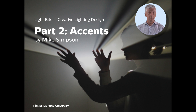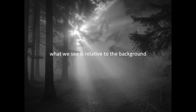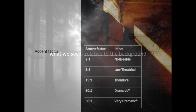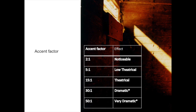We also have to think about the things that we're lighting and how they fit relative to their background, because ultimately everything we see will have some sort of background to it. It's the relationship between the object and the background that also helps create shape and form in our lighting design. We use a thing called an accent factor, which is the ratio between the light on the object and the light in the background.